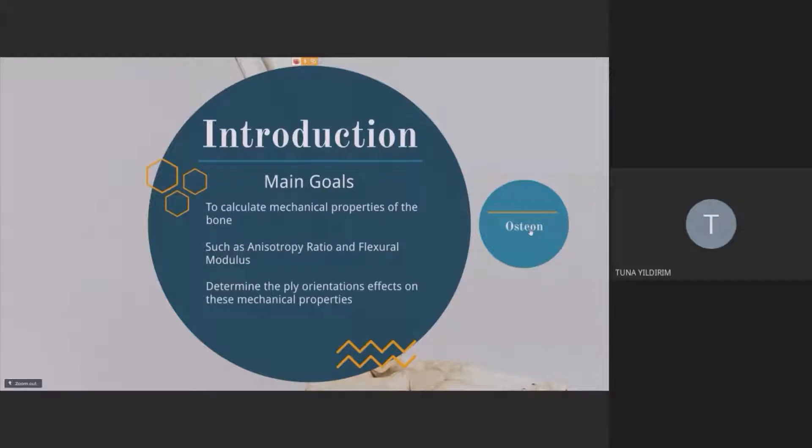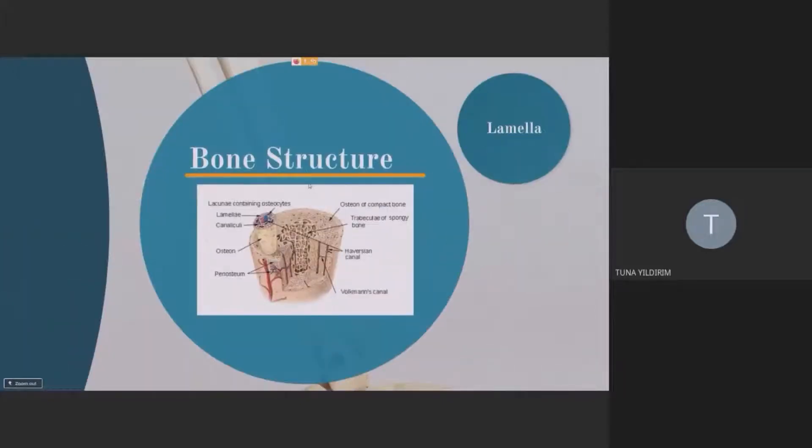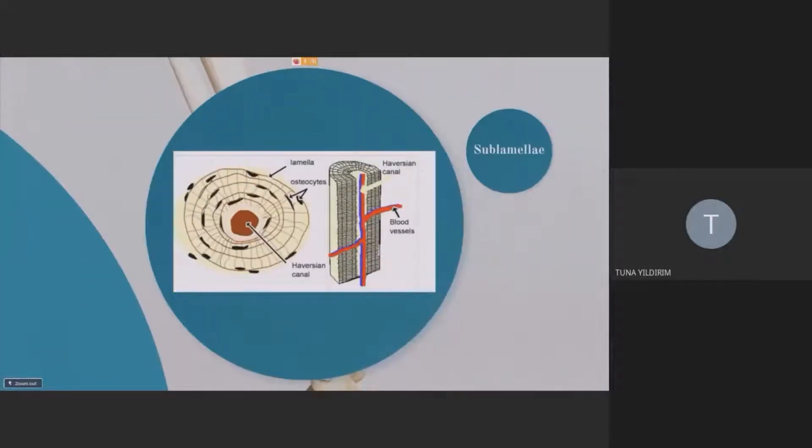To understand that, first we have to understand the structure of the bone. So you see the structure of the bone here, we got our osteon, which is our main focus in this study. In the osteon, if we zoom in, we see our lamellas, which are layer by layer, and in the center we got the haversian canal, and in these layers we got our sublamellas.